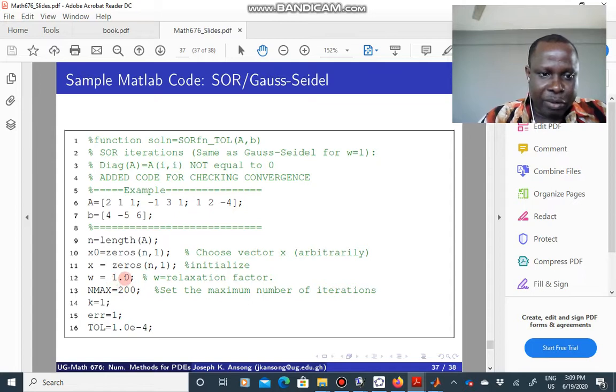Then you can experiment with different values of this omega. So 0.2, 0.1, 0.8, 1.1, 0.5, and see which one gives you faster convergence. So you can experiment with W here, which is the relaxation factor. Again, you can use this as a function.